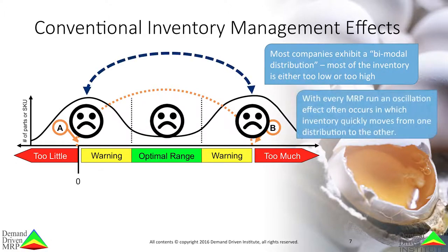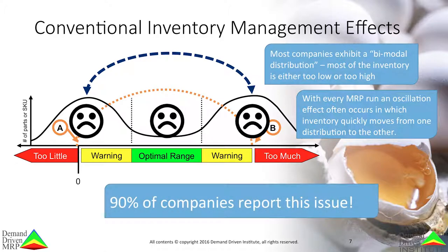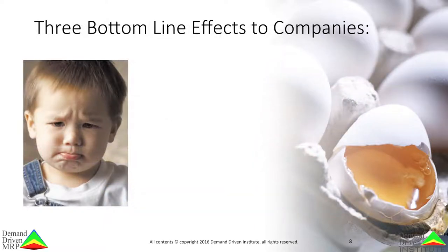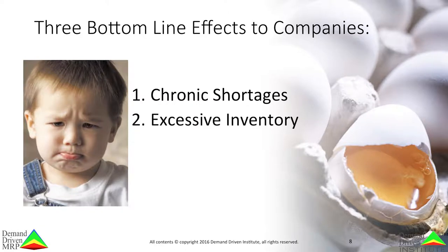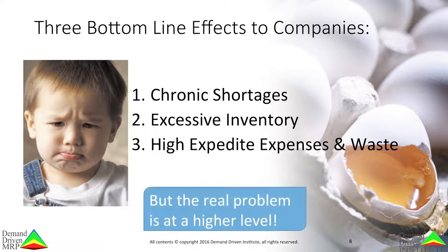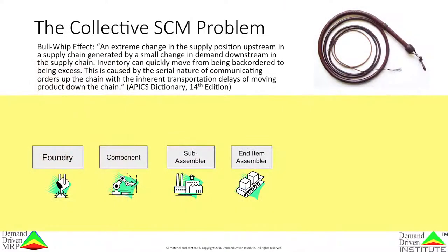Worse yet, every MRP run typically results in an oscillation, which shifts parts from one extreme to the other. 90% of companies using MRP report this issue. This bimodal distribution is devastating to the bottom line. It means chronic and frequent shortages while also having excessive inventory and incurring high expenses due to expedite and waste. Yet this is only at the single company level, and a single company is only one component of the collective supply chain.